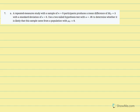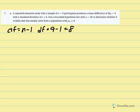We'll first find our critical t. Degrees of freedom equals n minus 1, so 9 minus 1 equals 8. Note that each individual has two scores, but participants are repeated in the second condition, giving 18 total scores for 9 participants. Using the t distribution with a two-tailed test at alpha 0.05 and degrees of freedom equal to 8, we find our critical t.